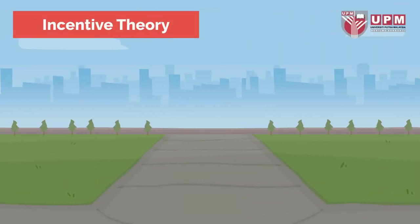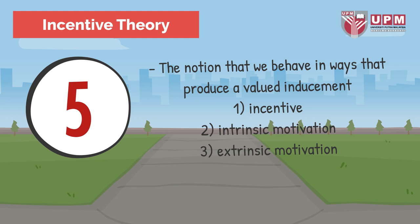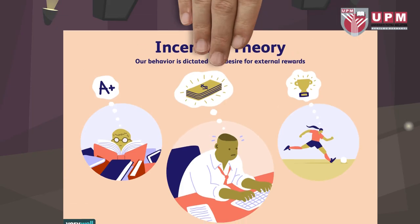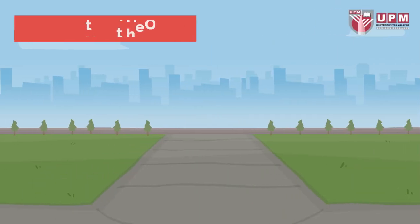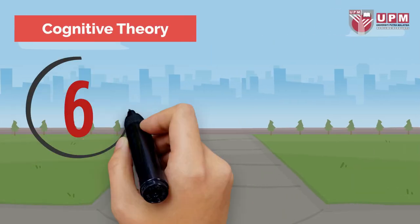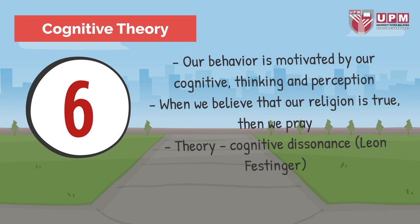Fifth, incentive theory is the notion that we behave in ways that produce a valued inducement. It includes first, incentive; second, intrinsic motivation; and third, extrinsic motivation. Our behavior is dictated by a desire for external rewards. Last is cognitive theory — our behavior is motivated by our cognitive thinking and perception. When we believe that our religion is true, then we praise.